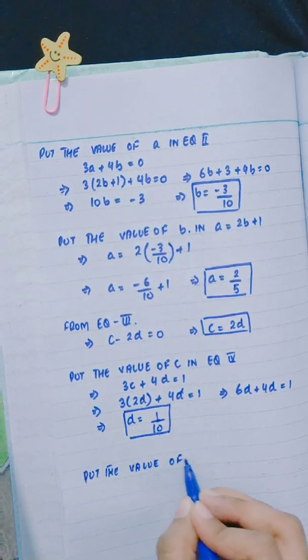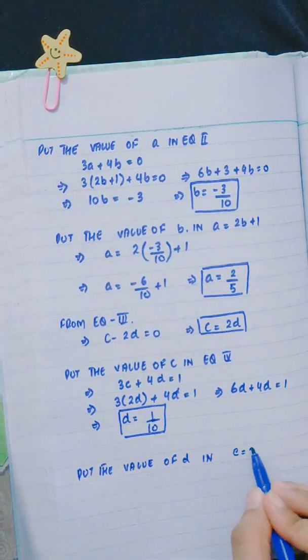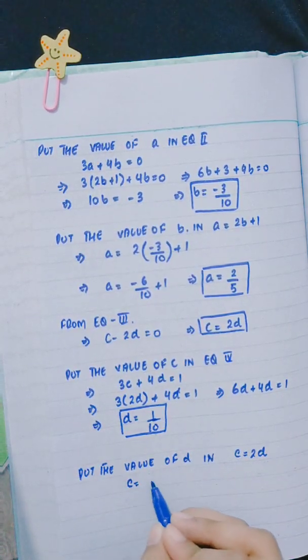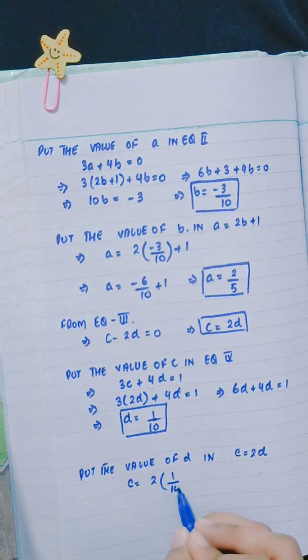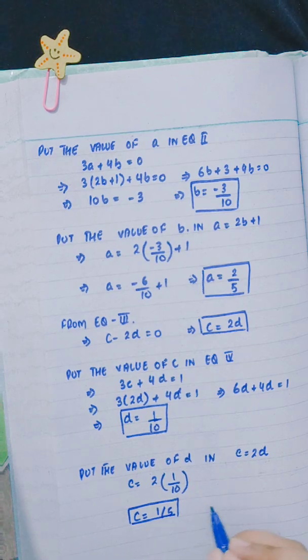Put the value of d in c = 2d. So c = 2(1/10), and c = 1/5.